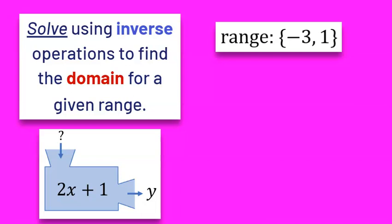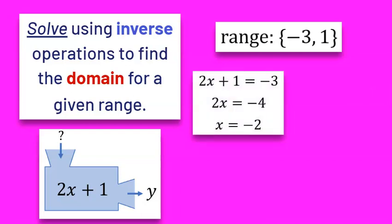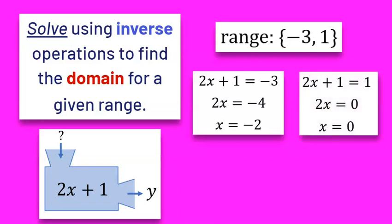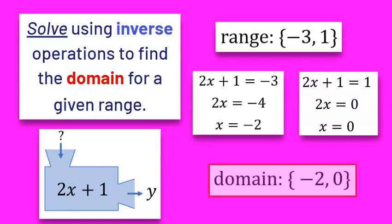Now let's do this in reverse — solve using inverse operations to find the domain. We're given the range, which represents the y values. Work backwards through the function machine: instead of adding 1, subtract 1; instead of multiplying by 2, divide by 2. So for 2x plus 1 equals negative 3: subtract 1 to get negative 4, divide by 2 to get negative 2. For 2x plus 1 equals positive 1: subtract 1 to get 0, divide by 2 to get 0. So the domain values are negative 2 and 0.